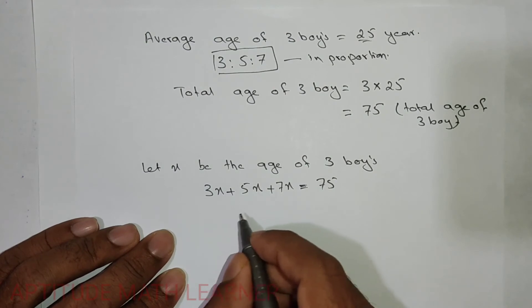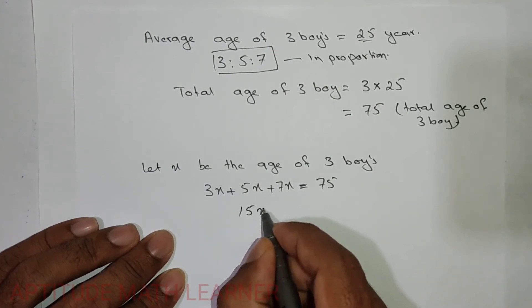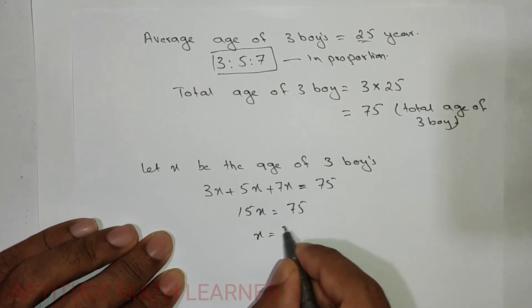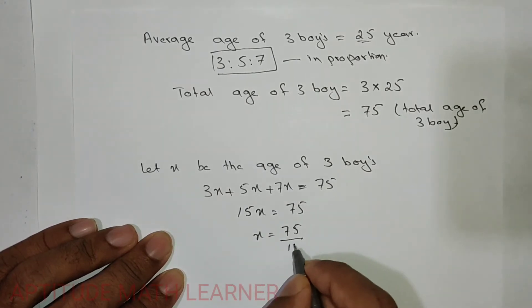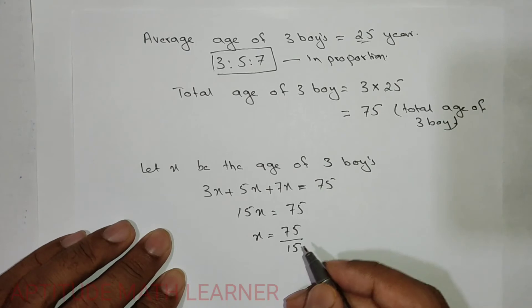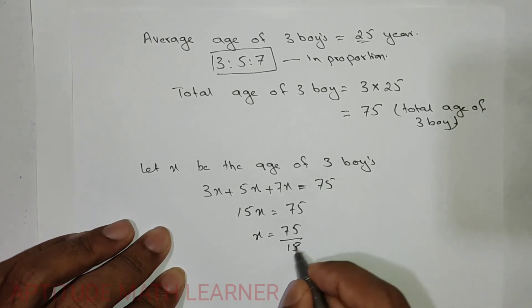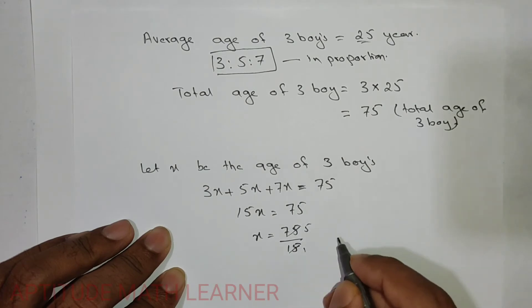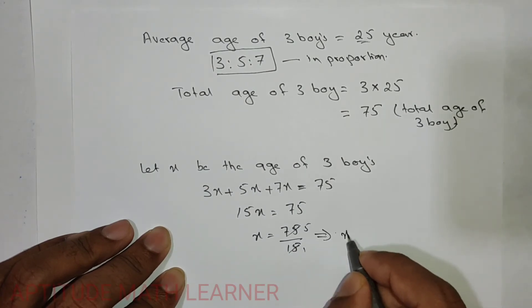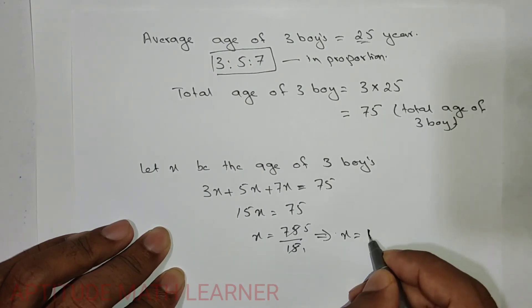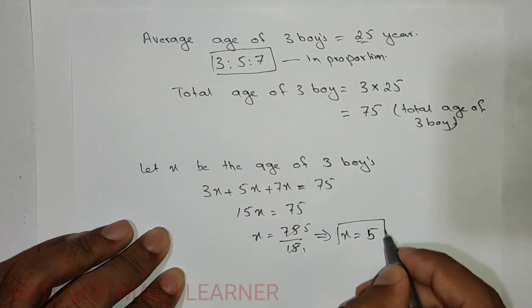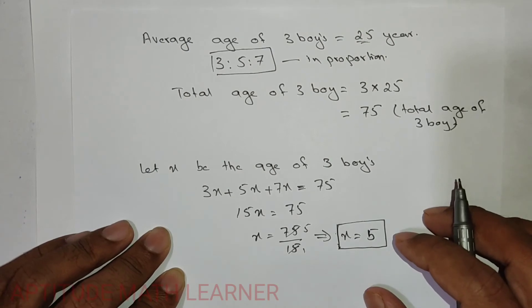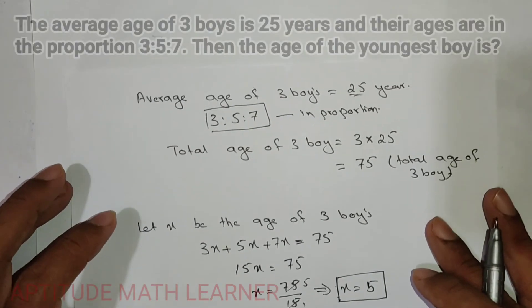Solving further: 15x = 75, so x = 75 ÷ 15, and we get x = 5. We have now found the value of x.